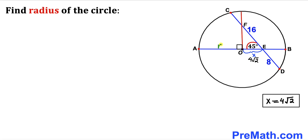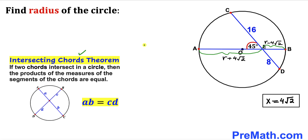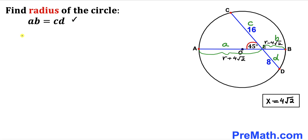Now we know this segment AE is going to be r plus X, which is r plus 4√2, and this segment EB is going to be r minus X, which is r minus 4√2. Recalling the intersecting chords theorem and applying it: A is r + 4√2, B is r − 4√2, C is 16, and D is 8.